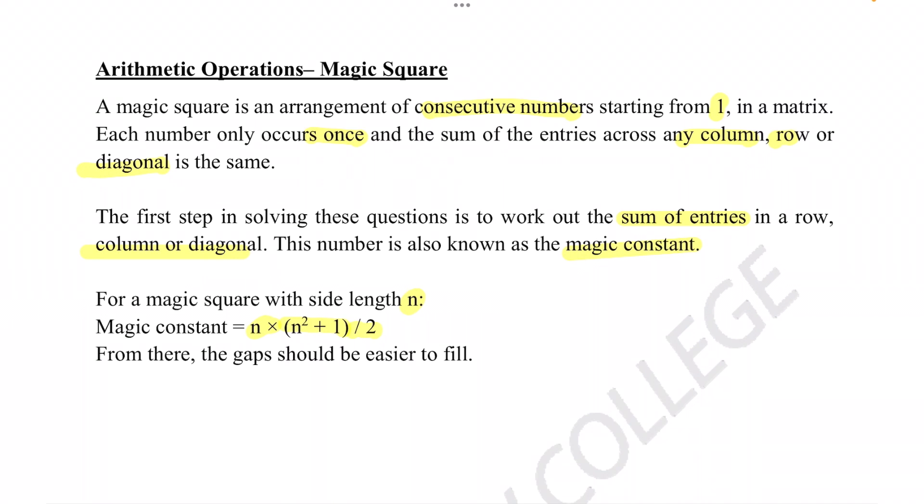Magic squares will test your ability to apply formulas and practice your addition skills. Hypothetically, in a magic square, you can see there are three squares in each side. What it means by magic constant is that each number put into these squares, whether going across or diagonal, should all equal the same amount if you add them together.